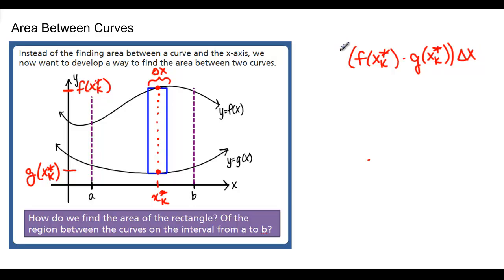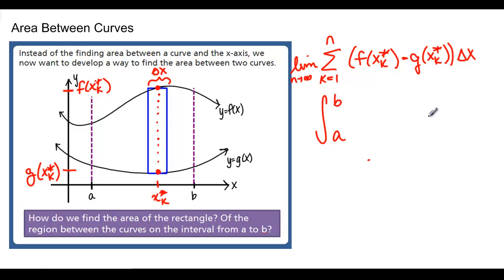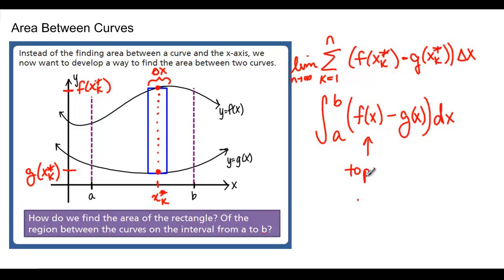That gives us the area of one rectangle. Now we're going to sum them all up, K starting at 1 and ending at N, and again take the limit as N goes to infinity to increase the number of rectangles and get the exact area between the curves. Just like before, this turns into an integral. The limit of the sum becomes the integral from A to B, the delta X becomes dx, F of X sub K star becomes F of X, and G of X sub K star becomes G of X. So to find the area between two curves from A to B, we just subtract the top function minus the bottom function and then integrate.